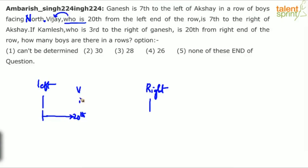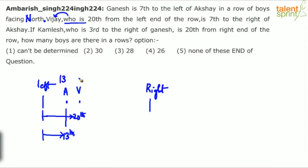Vijay is 7th to the right of Akshay. If Vijay is on the right of Akshay, definitely Akshay will be on the left of Vijay. Vijay is 7th to the right of Akshay and he is 20th from the left end. So Akshay's position should be 13th from the left end. Akshay is 13th, plus 7th position gives you Vijay — 13 plus 7 equals 20th.